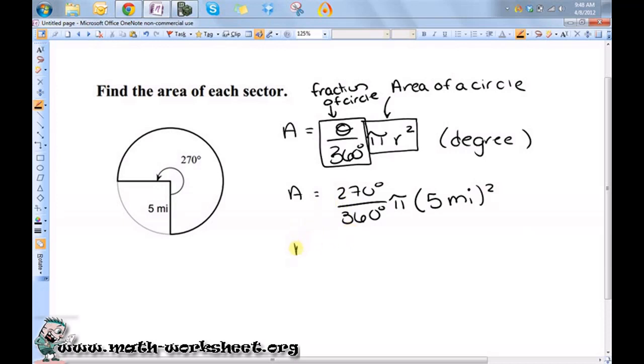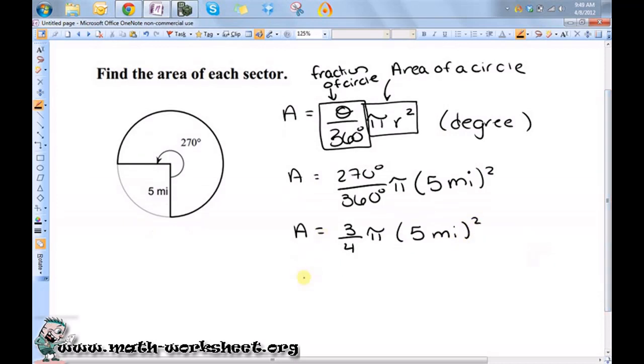So area is equal to 3 over 4 pi times 5 miles squared. Well, that's 25 times 3, so area is equal to 75 pi over 4 mi squared. Now, since it doesn't say anything about rounding, we should leave it in this form because this is the exact form.